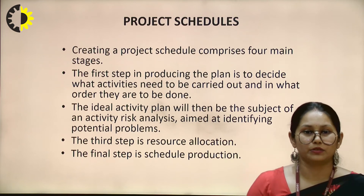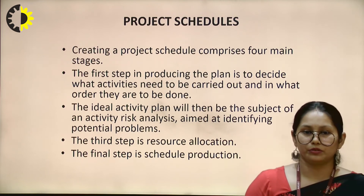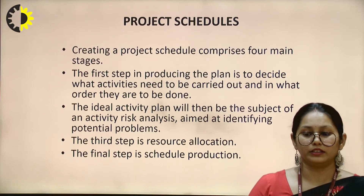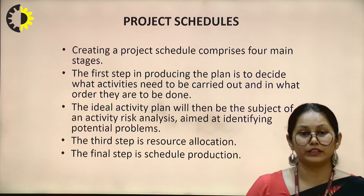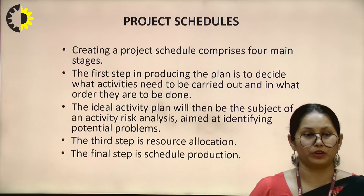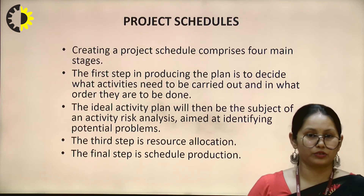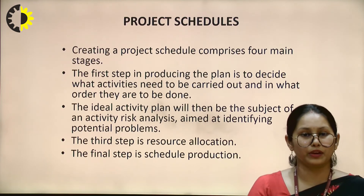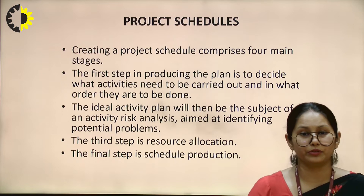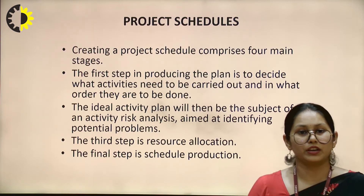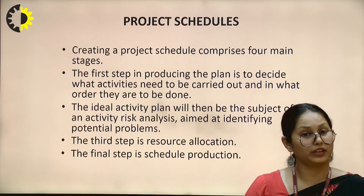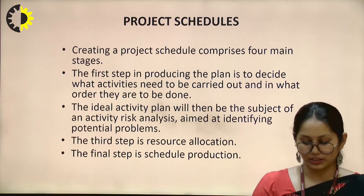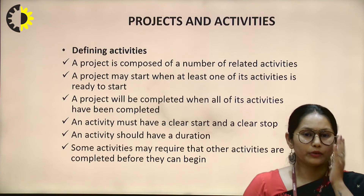The third step is resource allocation — finding out what various resources are needed and how they must be managed during actual implementation. The final step is schedule production — determining at what stage each module is produced, at what stage modules are finished, and how and when they are integrated. All these things need to be taken care of under the project schedule.